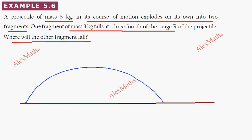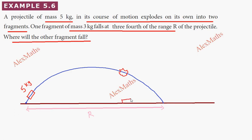The projectile has a mass of 5 kg. When it explodes, the 3 kg mass lands at three-fourths of the range. This is the range of the projectile — capital R. This represents the full range of the 5 kg mass.